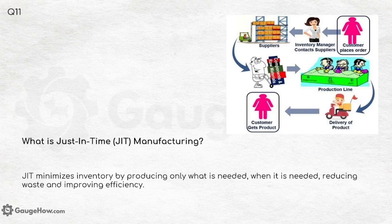What is Just in Time (JIT) manufacturing? Just in Time minimizes inventory by producing only what is needed, when it is needed, reducing waste and improving efficiency.